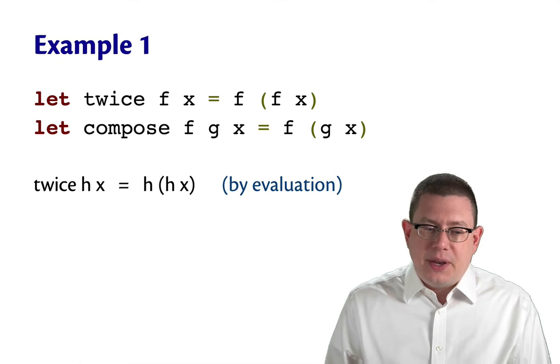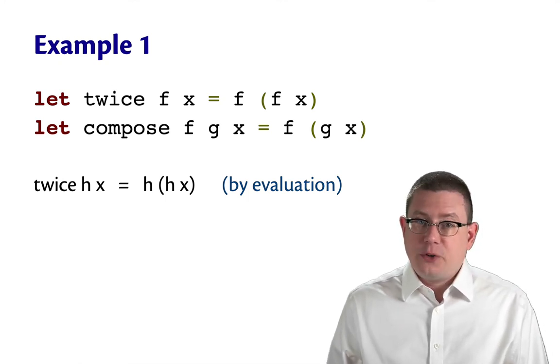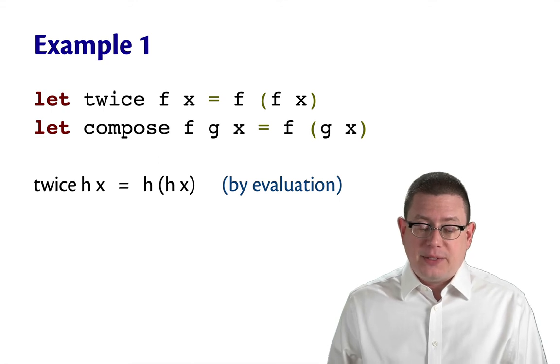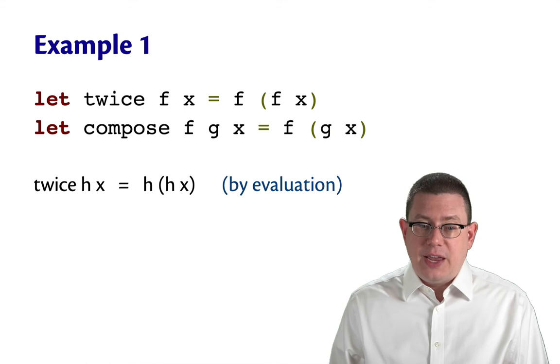Let's notice something here. If you run twice h x for some function h and some input x, what does that evaluate to? We know from studying the evaluation semantics of OCaml that we substitute h for f and therefore we get h applied to h x.